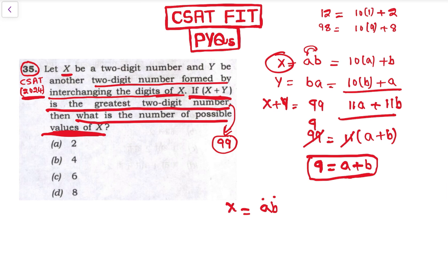This digit plus this digit has to be 9. So how many numbers are possible? We can start with: a is 0 and b is 9, but this is not a two-digit number.